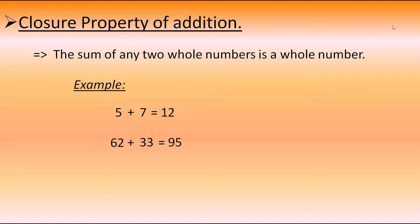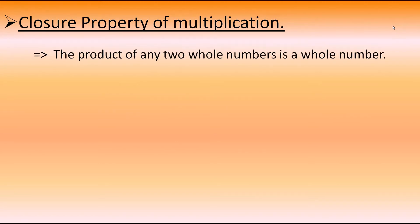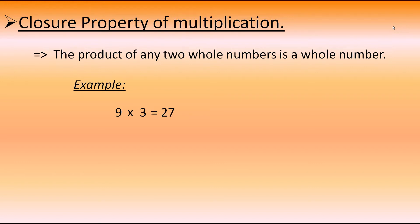Now let's understand the closure property of multiplication. It says that the product of any two whole numbers is a whole number. Means, if we take two whole numbers and multiply them, we get the product as a whole number only. For example: 9 and 3 multiplied gives 27, which is a whole number. And 44 and 12 multiplied gives 528, which is also a whole number. From both examples, we understand that the product of any two whole numbers is a whole number — that is the closure property of multiplication.